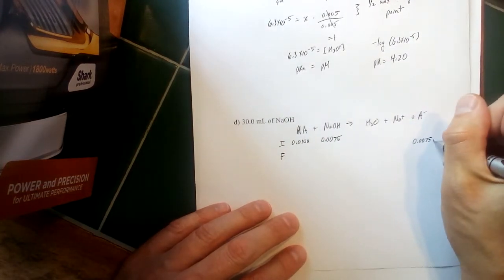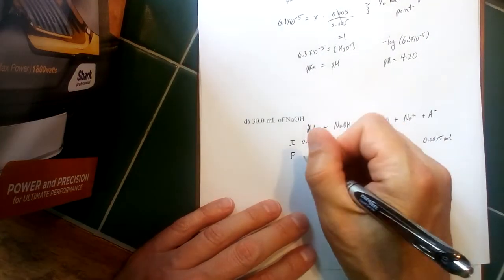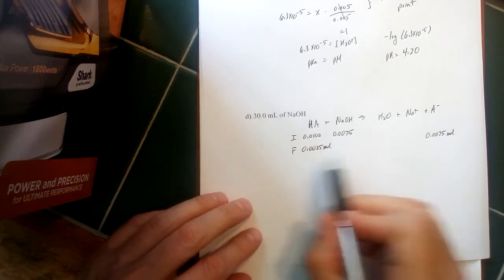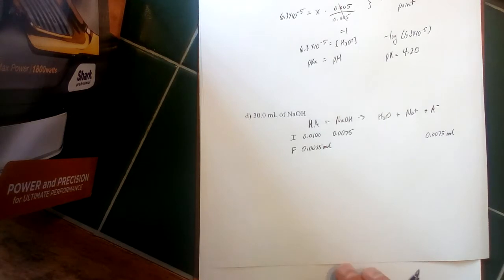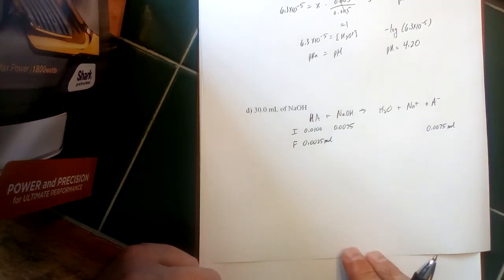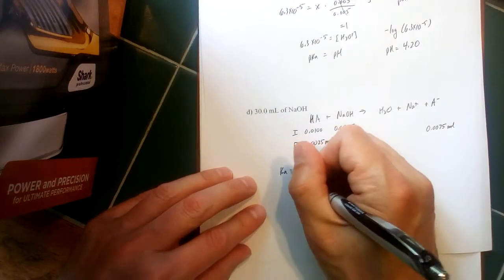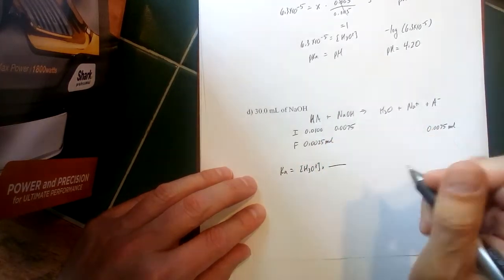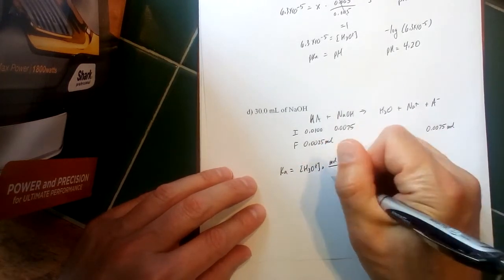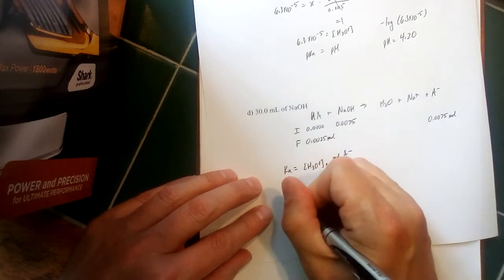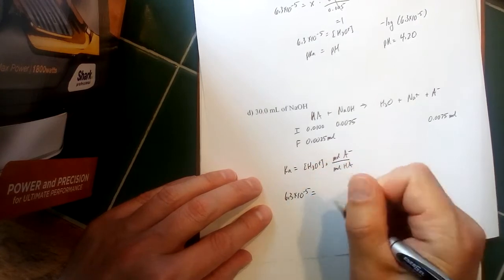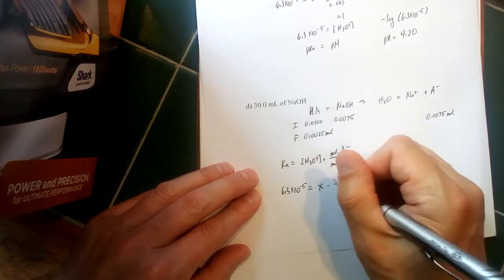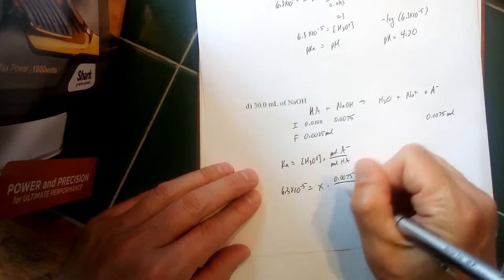And that means we're going to have 0.0075 moles of the conjugate base in our solution and 0.0025 moles of the weak acid leftover. Non-zero concentration of both of those means it is still a buffer, and that means we can still use this abbreviated version of our equilibrium constant expression: moles of A minus over moles of HA. So 6.3 times 10 to the minus fifth—call hydronium ion concentration x again here—moles of A minus now is 0.0075, moles of HA is 0.0025.